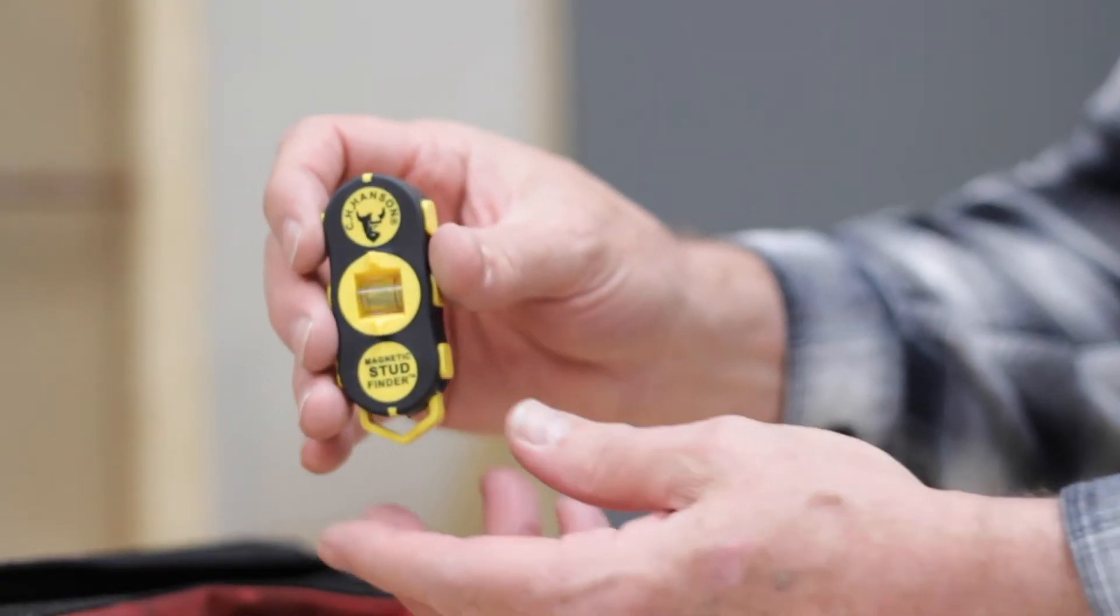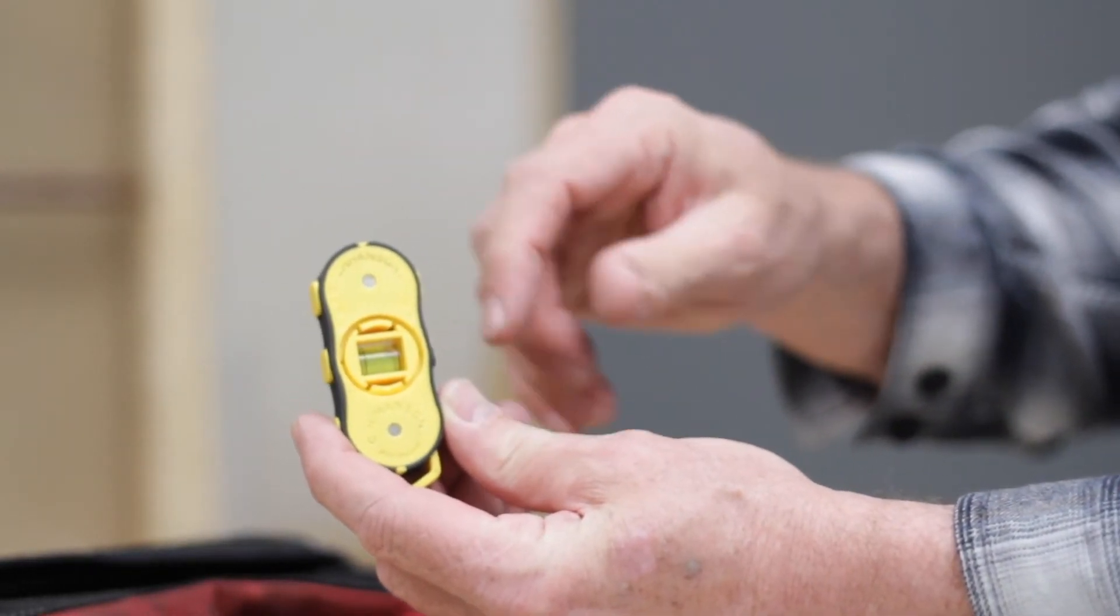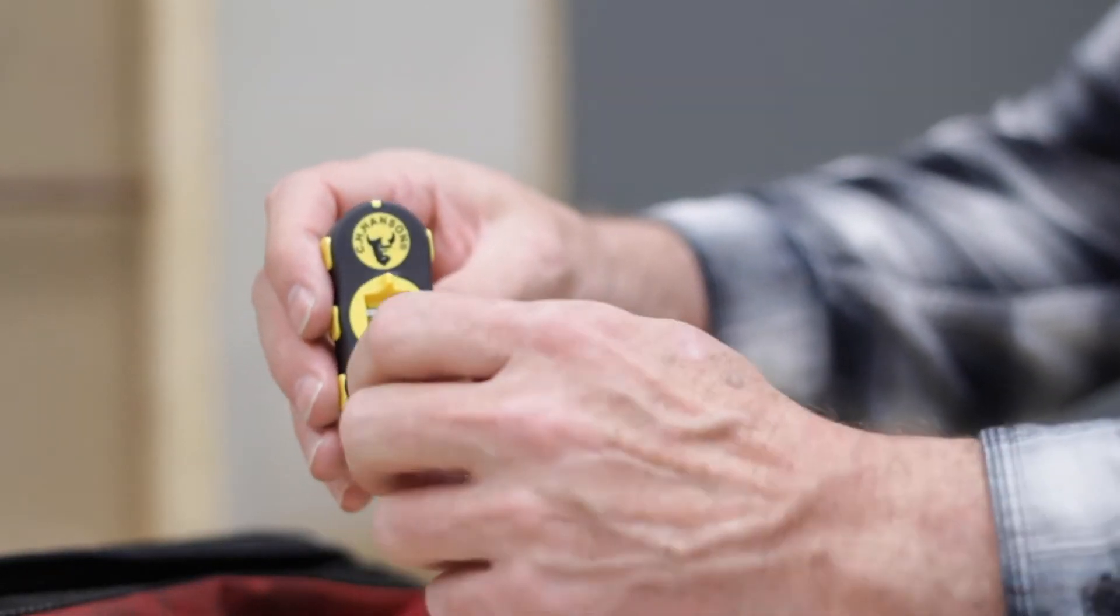Instead of electronics and batteries, the two rare earth magnets on the back lock onto screws and nails hidden behind drywall.